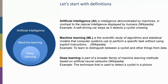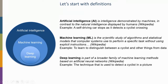Let's start with definitions, because these terms are often interlinked and not clearly separated. Artificial intelligence, or AI, is defined as intelligence demonstrated by machines in contrast to natural intelligence displayed by humans. For example, a self-driving car that stops for a cyclist without human interference is taking decisions that were thought to be exclusively human — that's artificial intelligence. Machine learning is a subclass of AI.